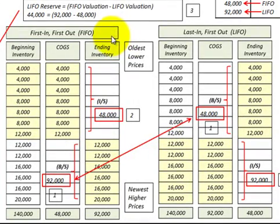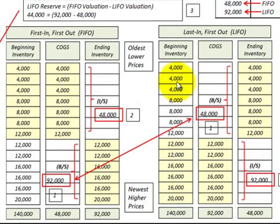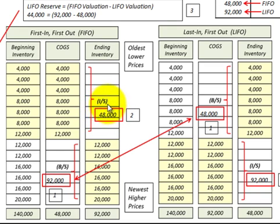Let's continue with our example comparing FIFO and LIFO using the same tables. Our oldest or lowest-priced inventory is listed at the top, and as we move down the table we get to our newest and higher-priced inventory — so this model is based on increasing costs. For FIFO, we use our oldest, lower-priced inventory first. In this case, we used $48,000 worth of inventory recorded as cost of goods sold on our income statement, leaving an ending inventory of $92,000 on our balance sheet ($140,000 beginning inventory minus $48,000 used).